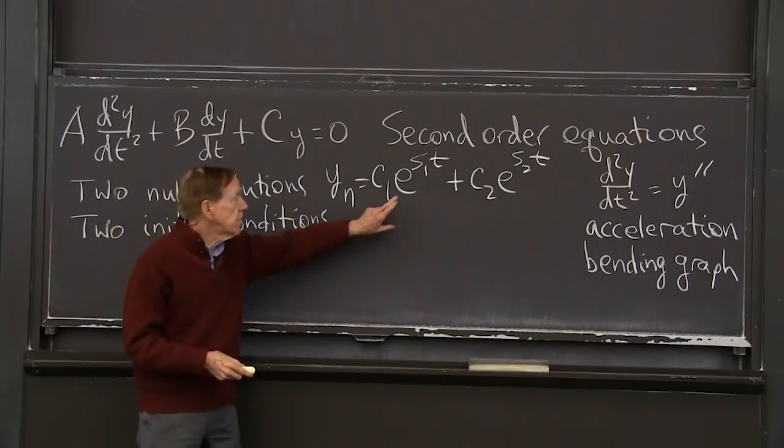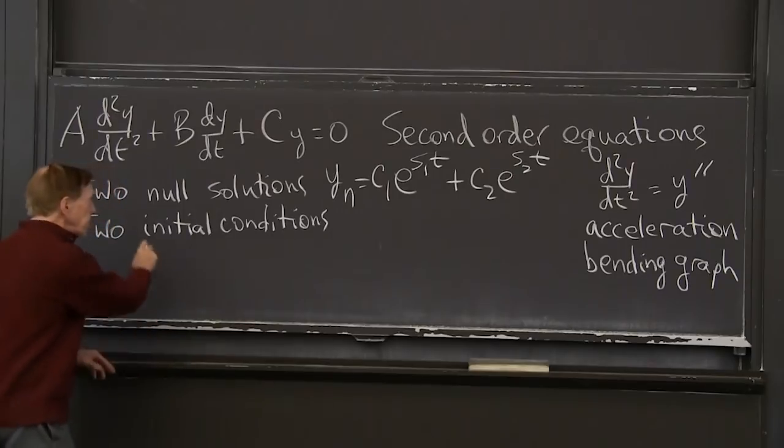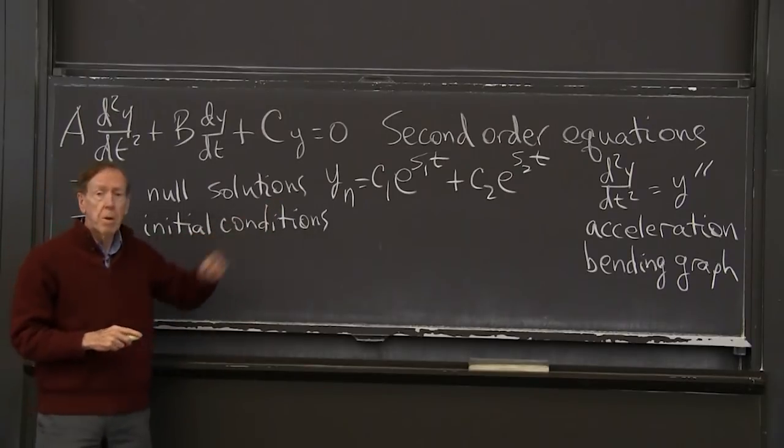So we have two constants, c1 and c2, in the null solutions. And we need two initial conditions to determine those constants.